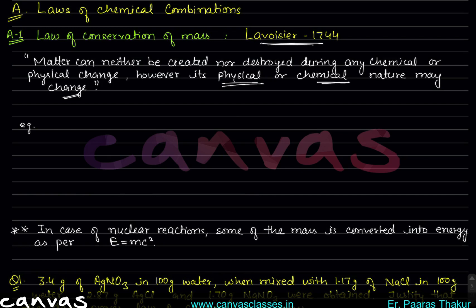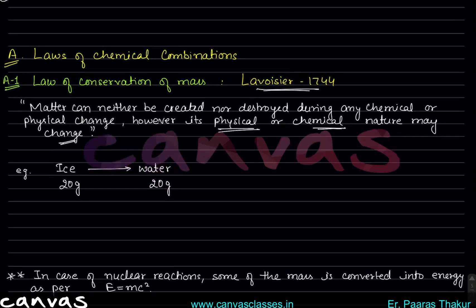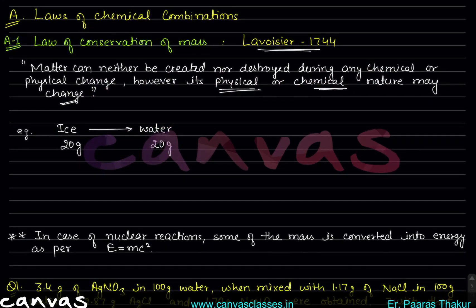For example, if we talk about ice — if there is 20 grams of ice, then we will have 20 grams of water. So we change the state of the mass, but the mass itself remains the same.